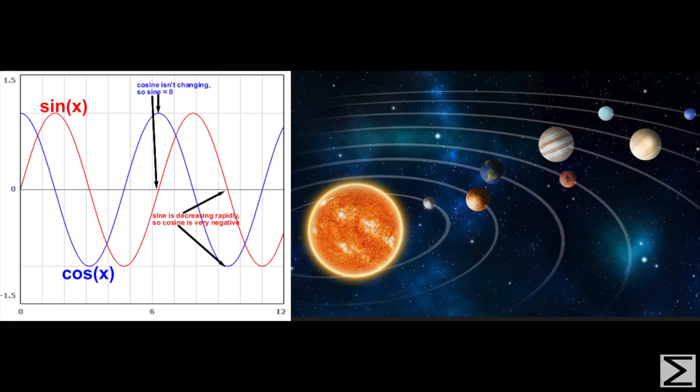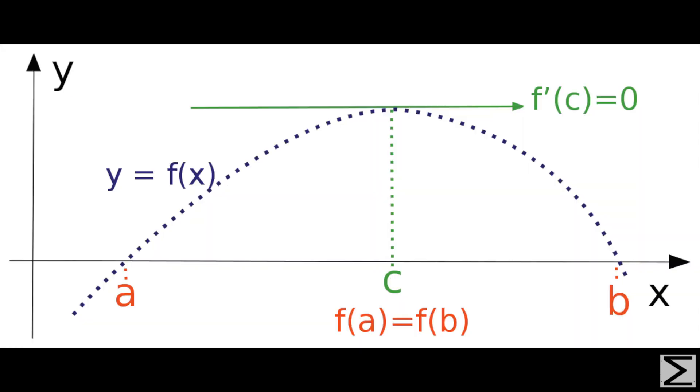Bhaskara's most notable discoveries were in the field of calculus. Hundreds of years before Newton and Leibniz pioneered calculus in the Western world, Bhaskara examined instantaneous rates of change of planetary motion. He discovered that the path of the planets followed the sine function and figured out that the instantaneous rate of change of the planet's motion was equal to the cosine of time.